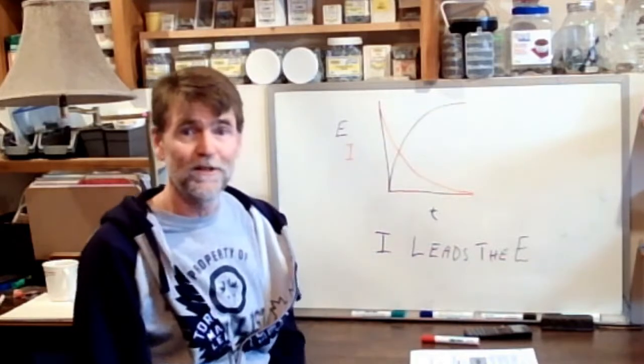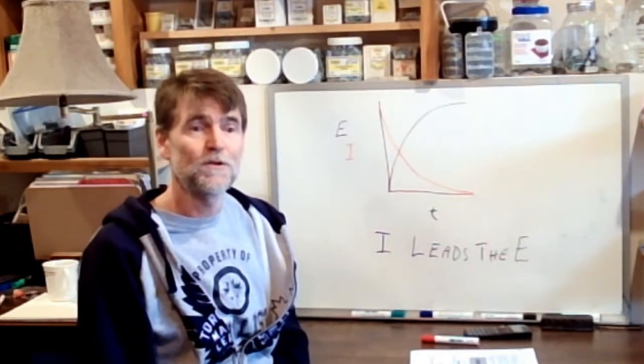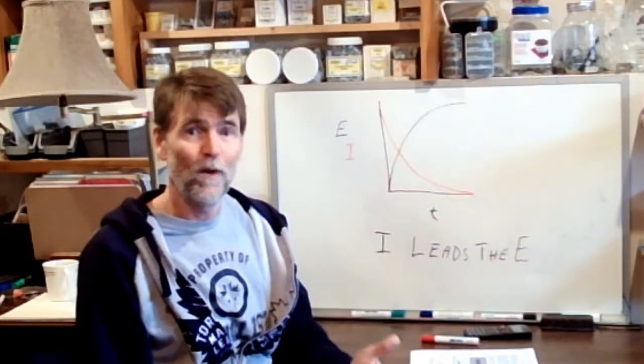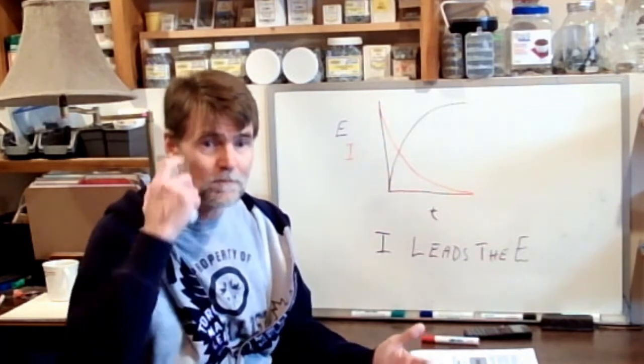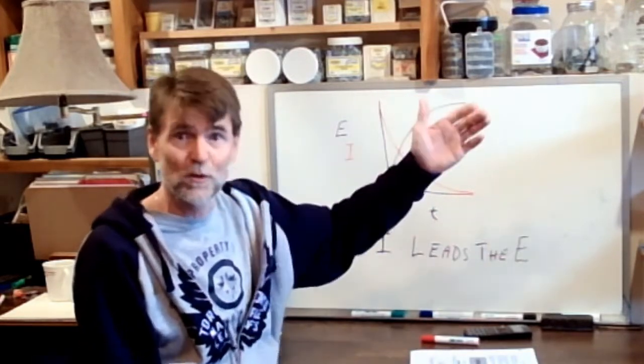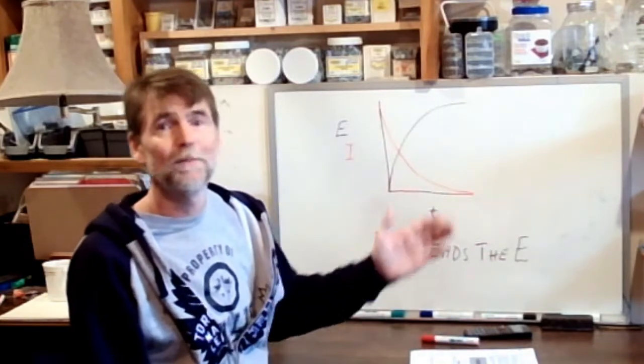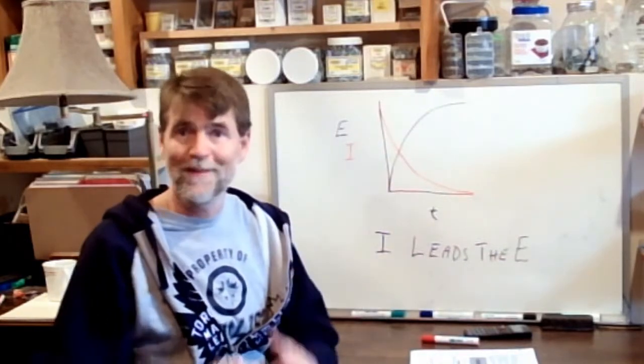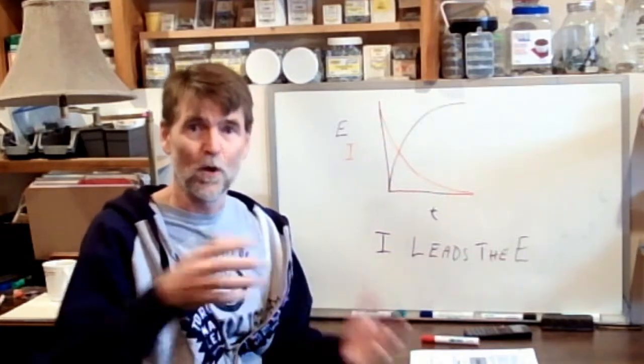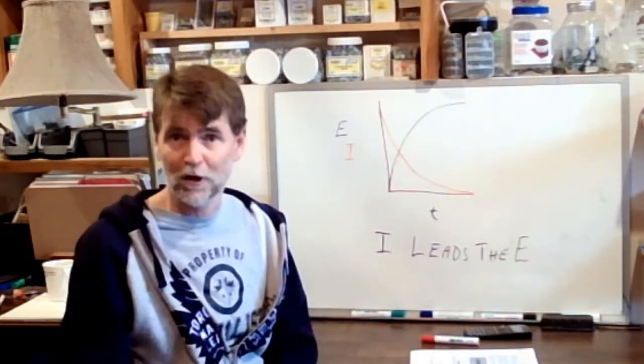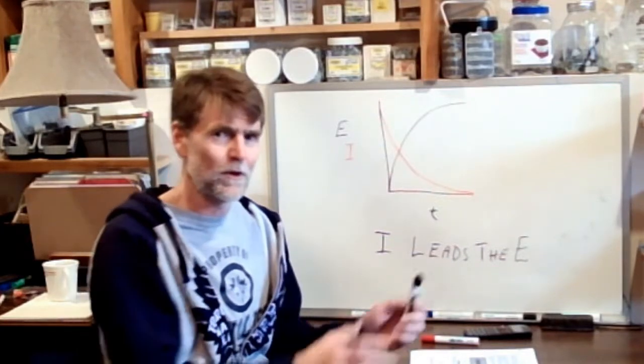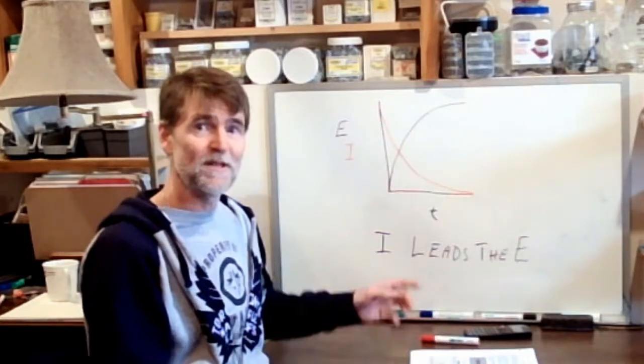Remember in the circuit with an inductor, the moment we close the switch we immediately had voltage, the potential was there, but it took time for the current to build because the magnetic field of the inductor opposed that growing current. So it took time for the current to grow even though the voltage was there immediately. We said that the current lagged the voltage. Now the opposite is happening.